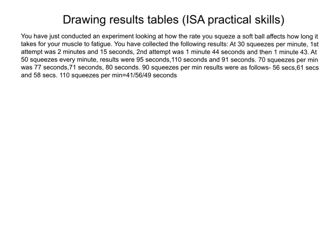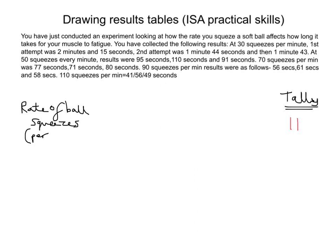First of all, the independent variable should be fully described in the left column heading — that's one mark. We're going to keep a tally of marks that we could potentially get just from this results table. The actual marks may change, but I'm going to mark this out of 6. This is the first mark on our tally. We need the independent variable — the thing that you've chosen to change — in the left column heading. So in this example, it would be the rate of ball squeezes. So there's our column heading: rate of ball squeezes. For the second mark, we must give the units, and that only goes in the column heading. So as it's a rate, this would be per minute. You must always include units, but they only go in the column heading.